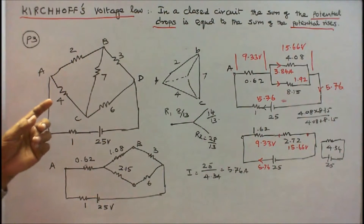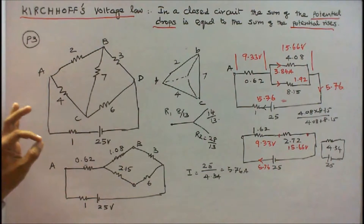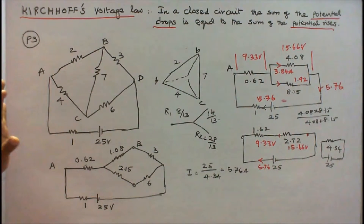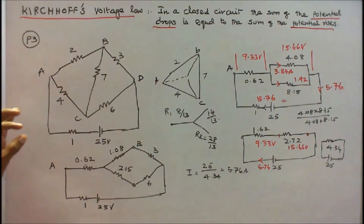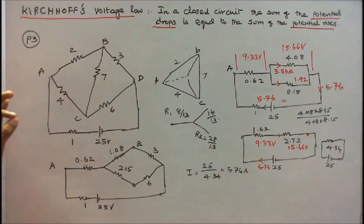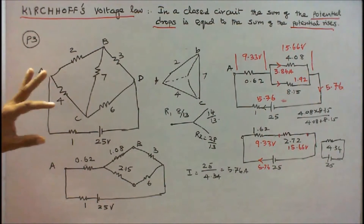Problem number 3: Six resistors and one voltage source are connected as shown in figure. My aim is to find the current flow through the 1 ohm resistor and to verify Kirchhoff's Voltage Law. In this network, there are two deltas: A, B, C — one delta; B, D, C — another delta.